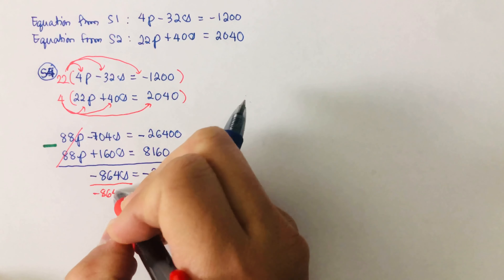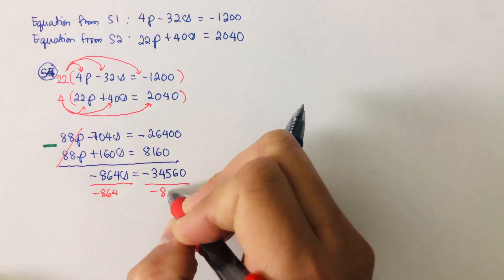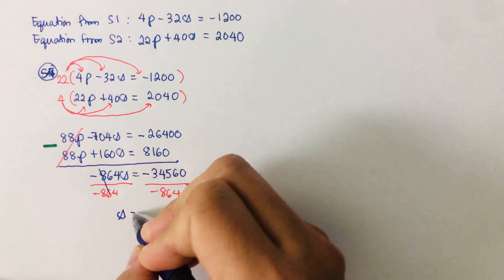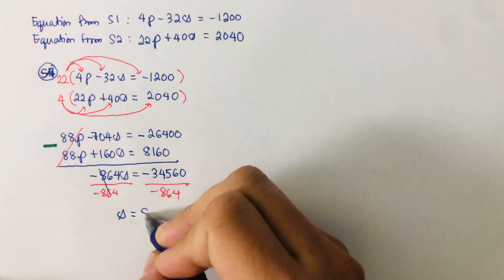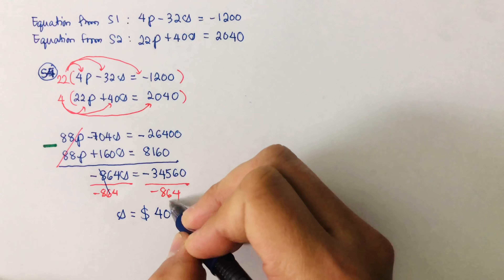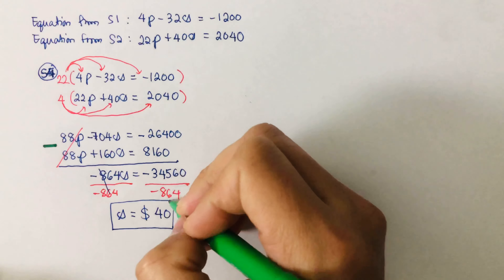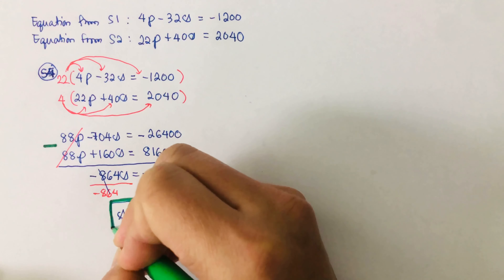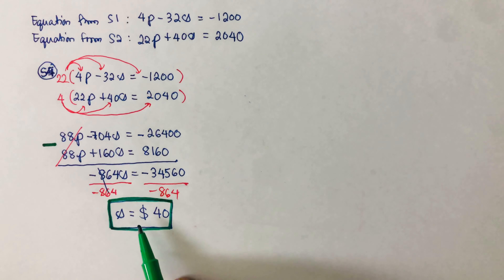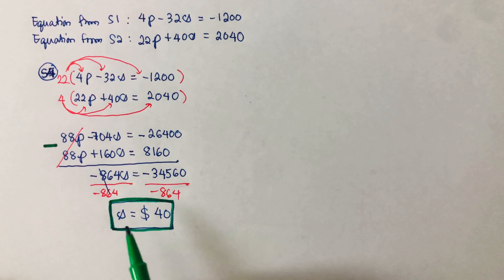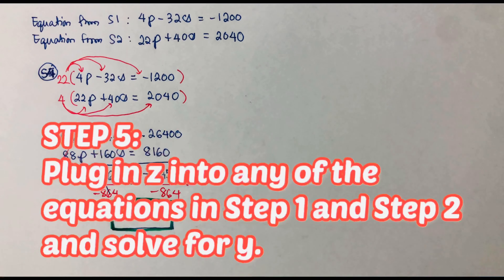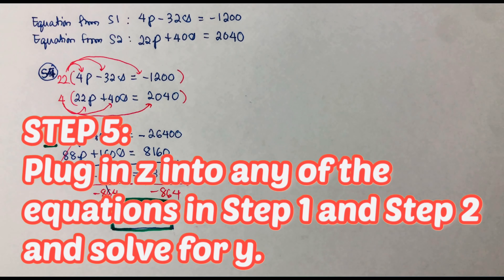We solve for s by dividing both sides by −864. This gives s = 40. So one pair of shoes costs $40.